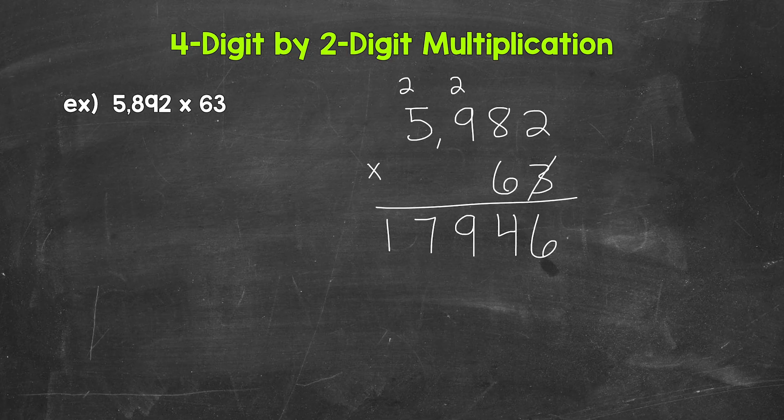Now we are done with this 3, this 2, and this 2. I'm crossing those numbers off since we are done with them. That way, we don't confuse these numbers with any other numbers as we continue working through this problem — it helps us stay organized.